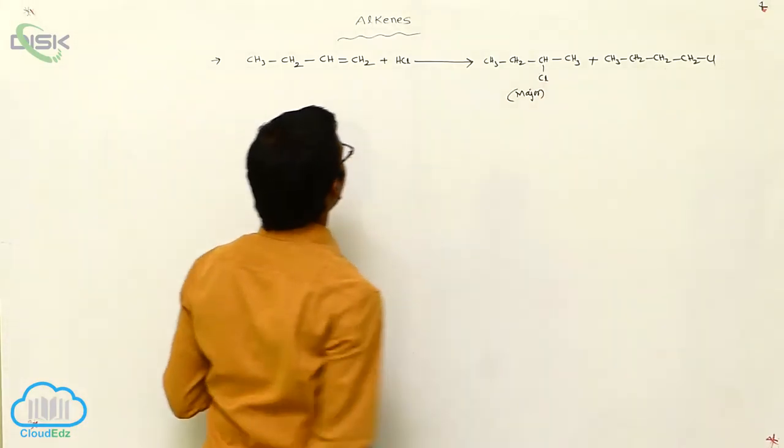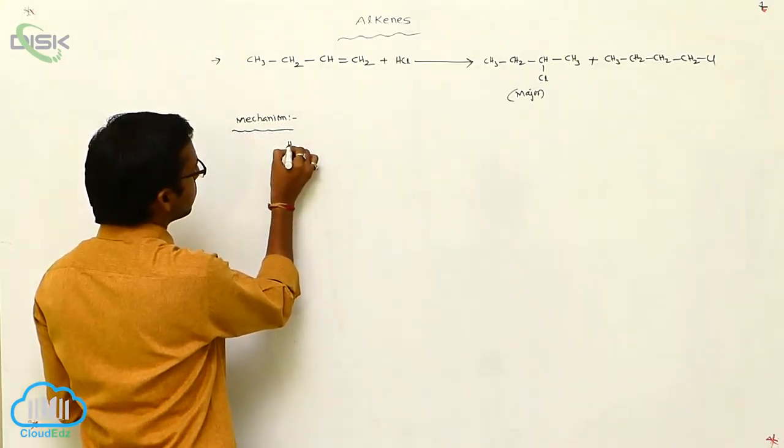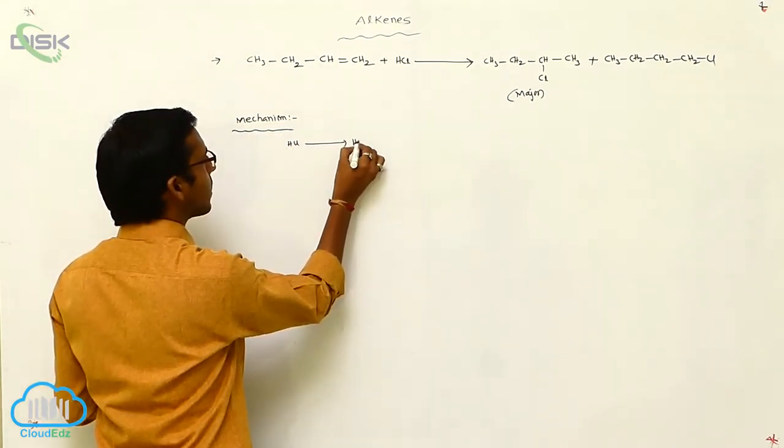One, two, three, four carbons in each structure. In this, this is your major product and this is your minor product.